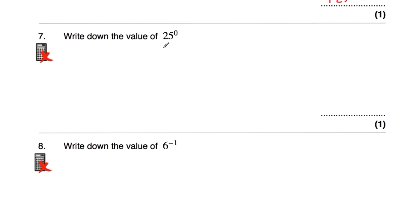Question 7: work out the value of 25 to the power of 0. Anything to the power of 0, except for 0 itself, is equal to 1. So 25 to the power of 0 is equal to 1. That's an important rule to learn.